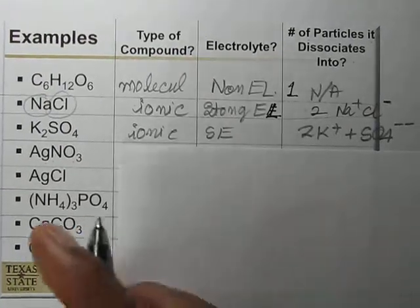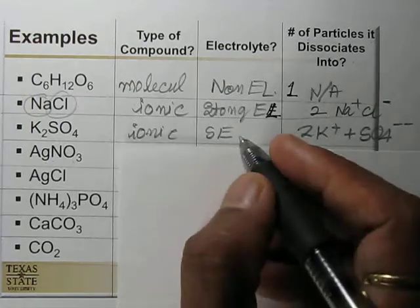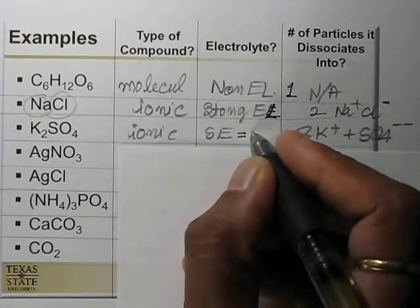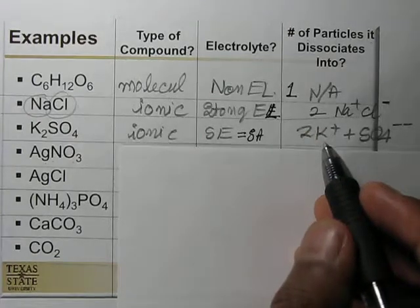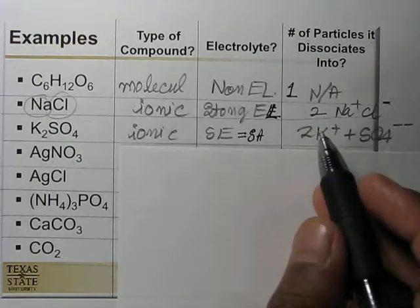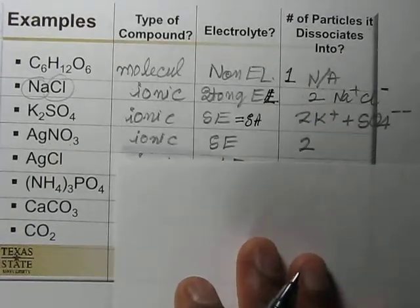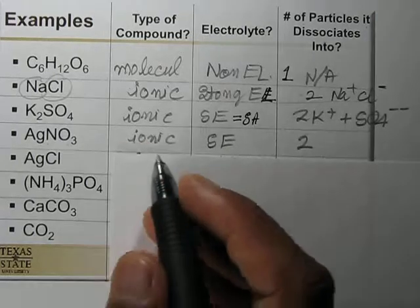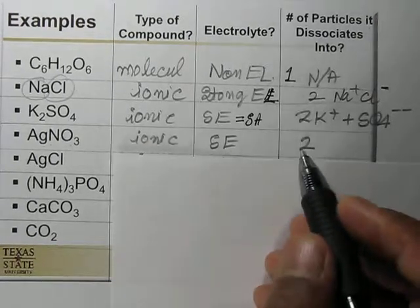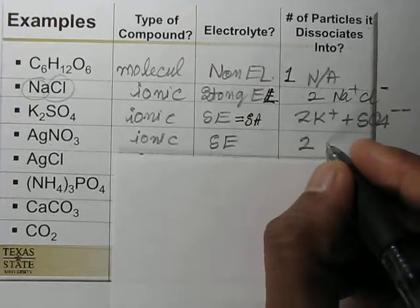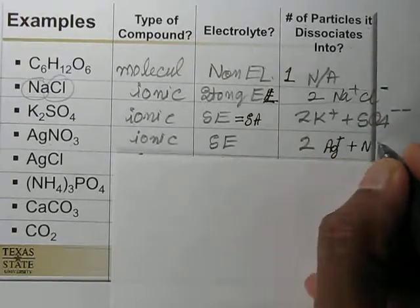K2SO4 is an ionic salt and a strong electrolyte. It dissociates into two potassium ions and one sulfate ion, giving three total particles. Silver nitrate (AgNO3) — since all nitrates are soluble — is an ionic compound and a strong electrolyte, giving two ions: silver ion and nitrate ion.